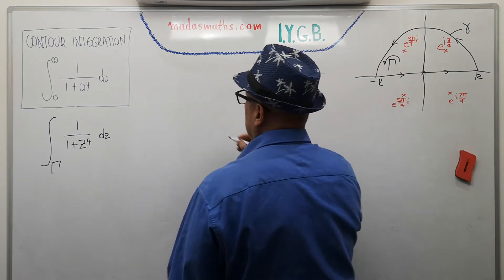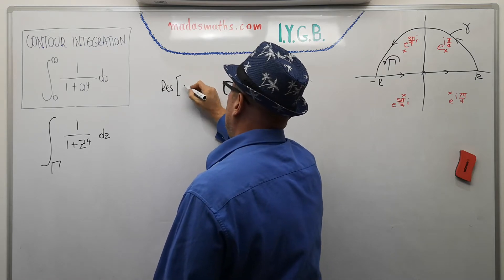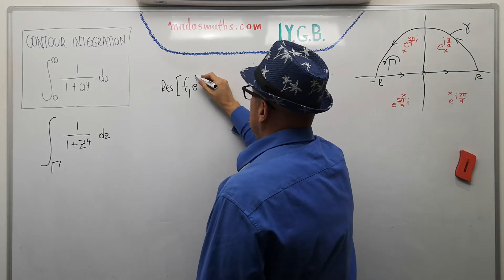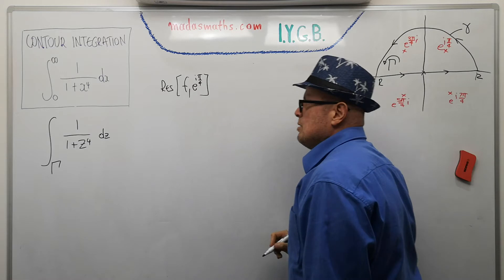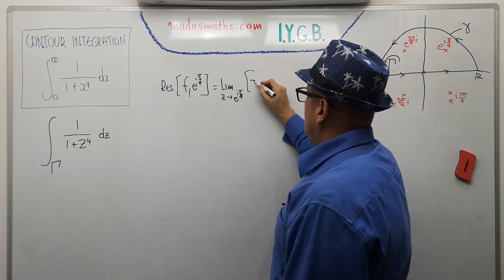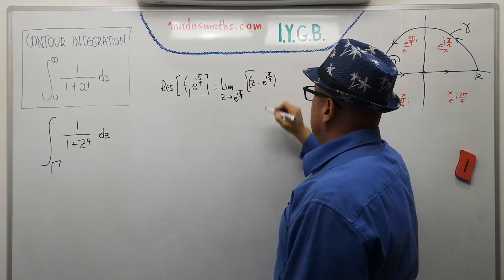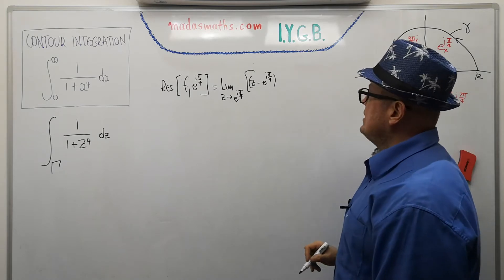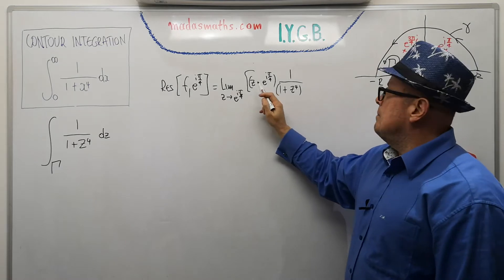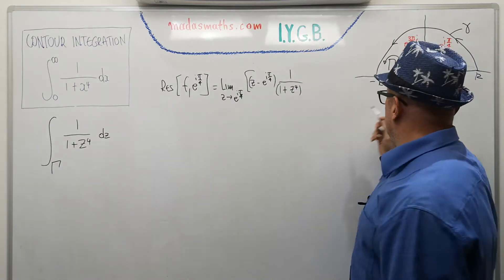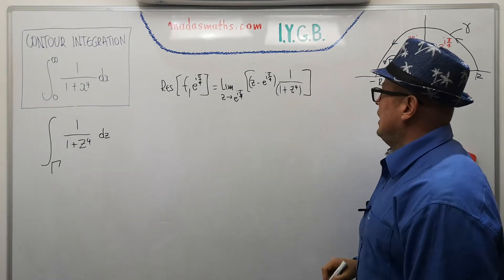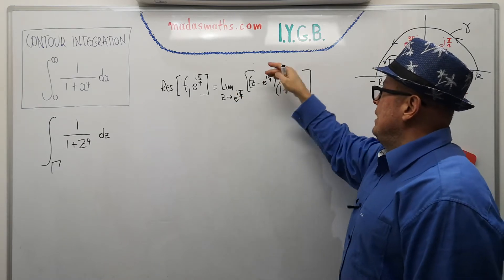Residue of f(z) = 1/(1+z⁴) at e^(iπ/4). We take the limit as z → e^(iπ/4) of (z − e^(iπ/4)) × f(z). This is zero over zero, so we use L'Hôpital's rule: differentiating numerator gives 1, denominator gives 4z³. Substituting z = e^(iπ/4) gives 1/(4e^(i3π/4)) = ¼ e^(−i3π/4).